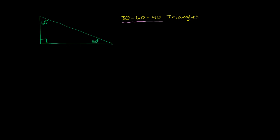If the hypotenuse — remember, the hypotenuse is opposite the 90-degree angle — has length x, what we're going to prove is that the shortest side, which is opposite the 30-degree angle, has length x over 2, and that the side opposite the 60-degree angle is going to be square root of 3 times x over 2. That's what we're going to prove, and then in other videos we'll apply this useful result.